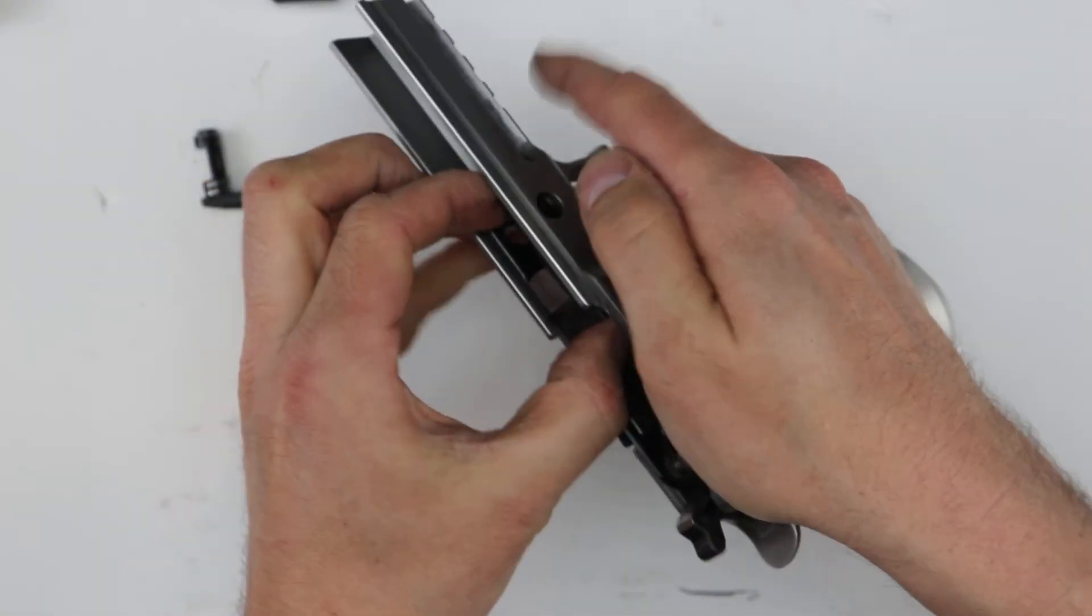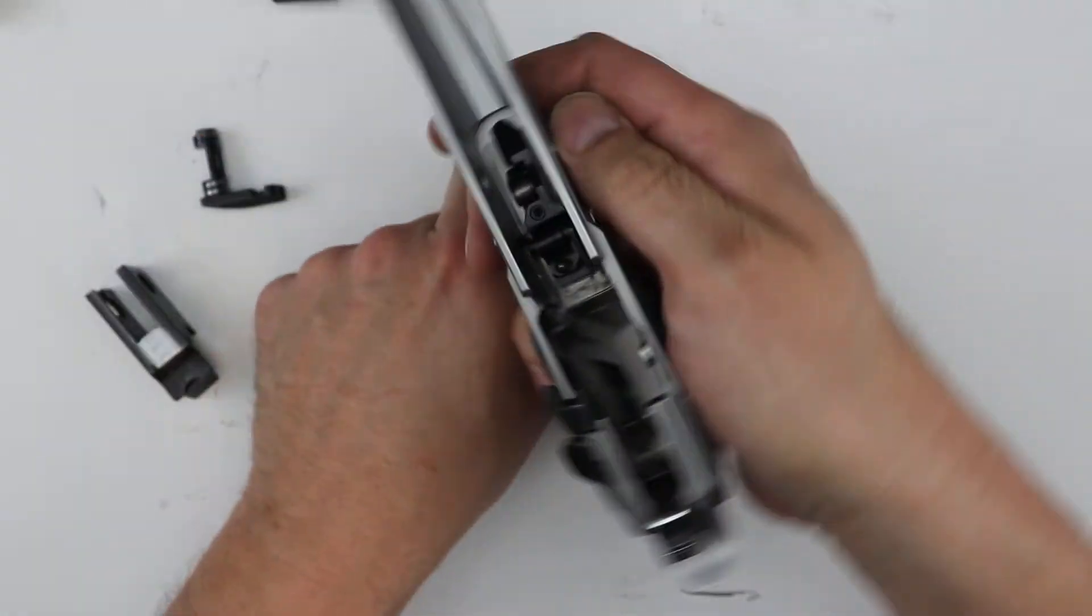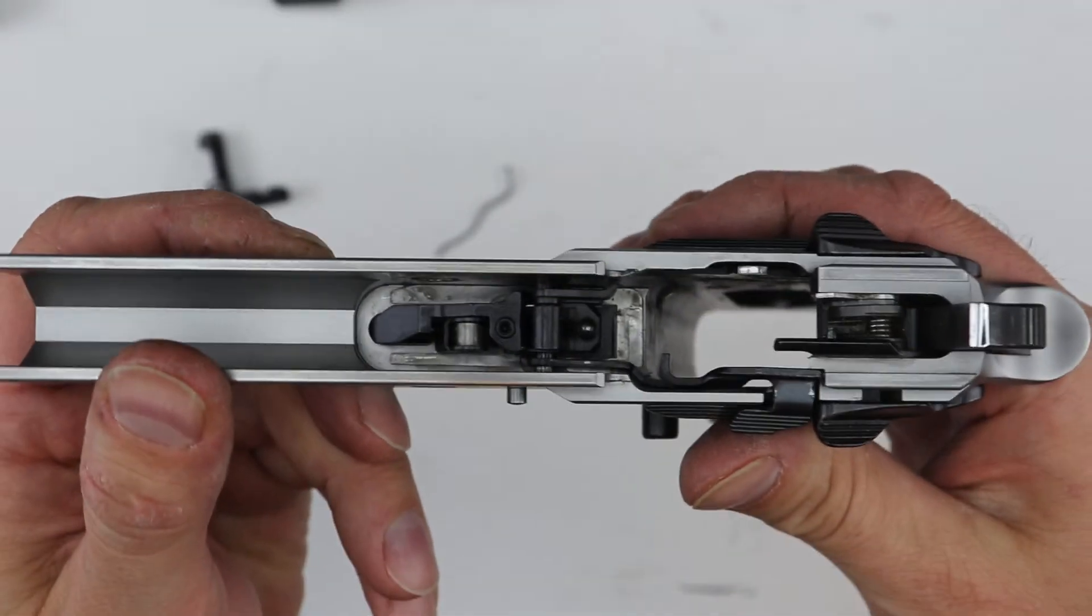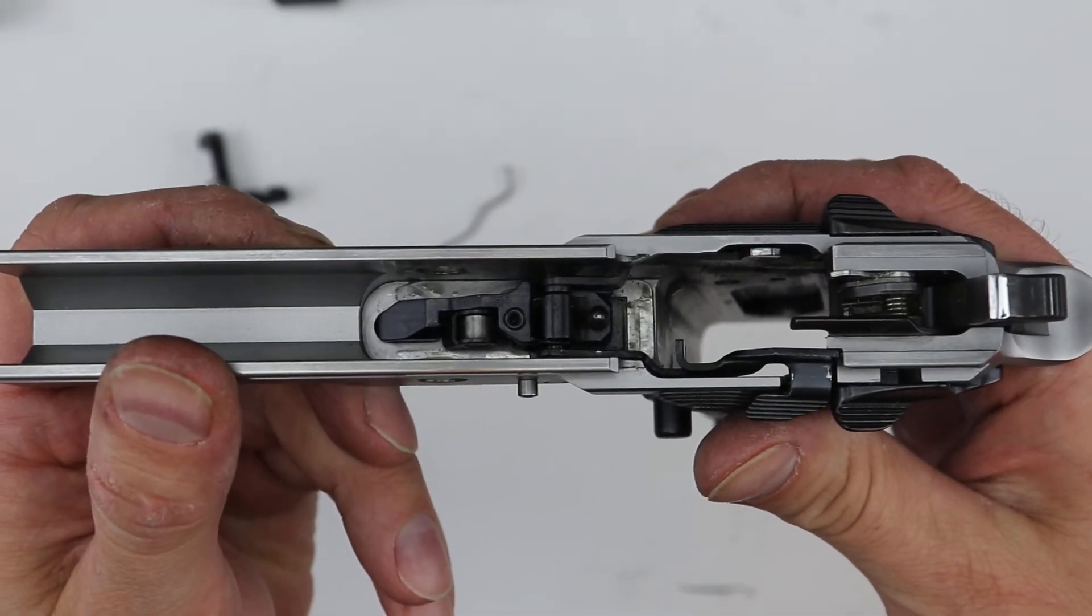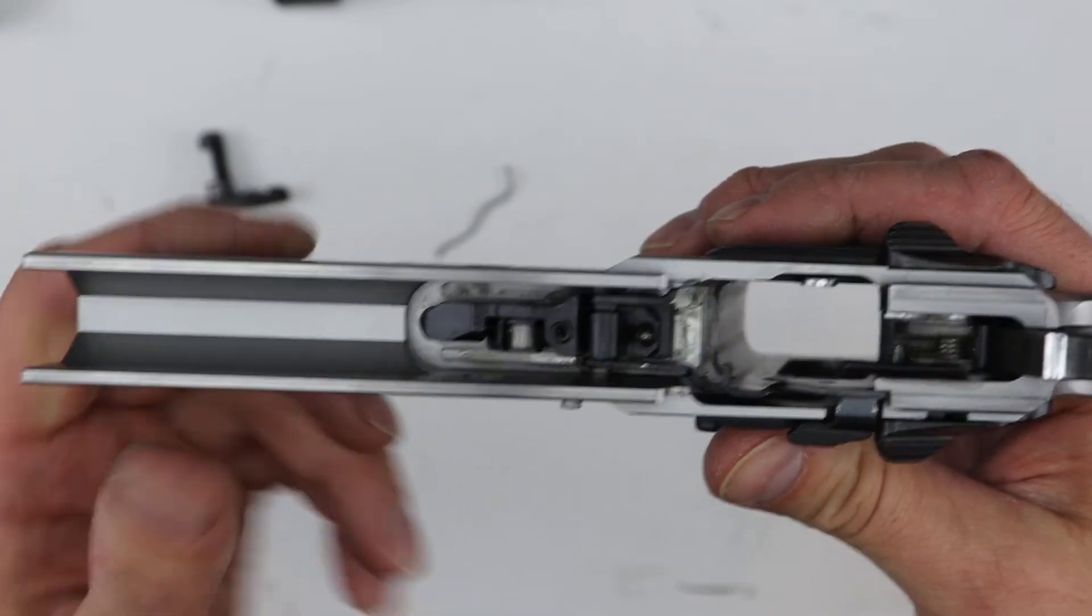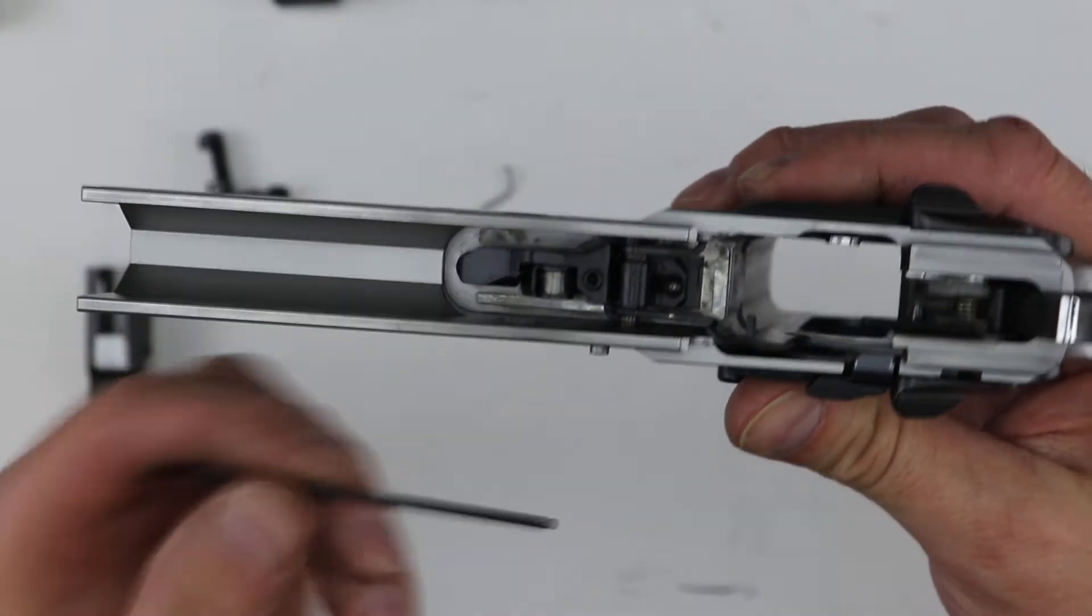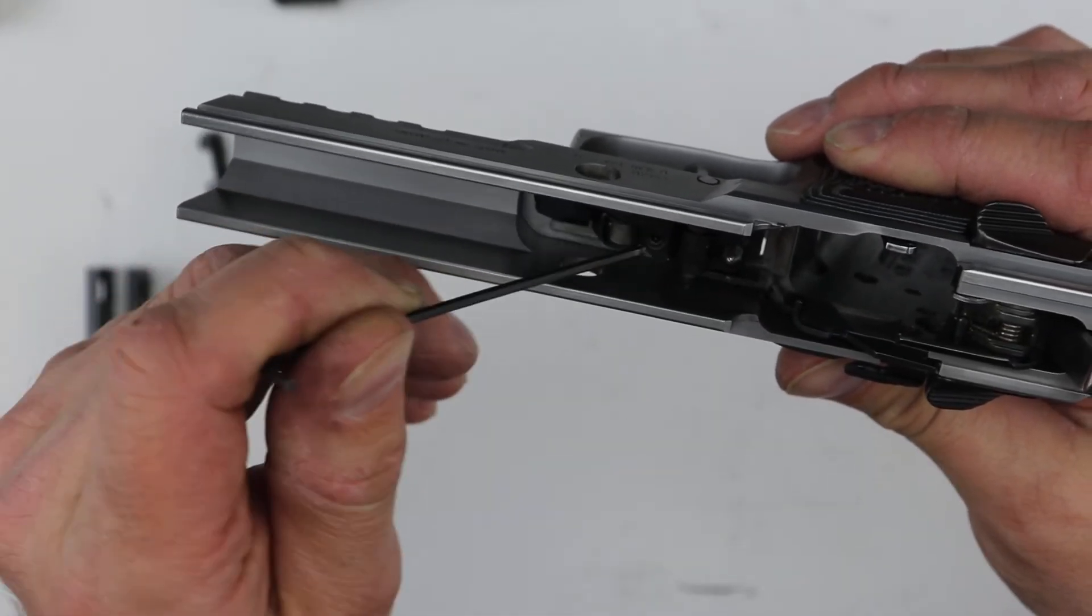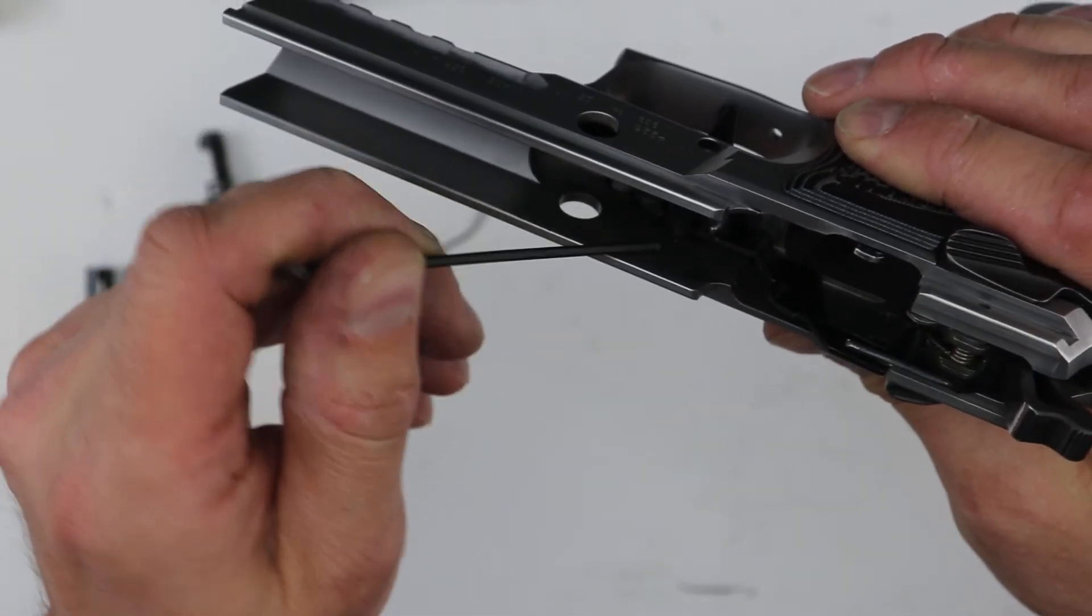Remove this here and here's the trigger system. You can see it in there. Now you can see the pre-travel screw real easily. The trigger weight screw actually goes up and presses against this piece right here, I believe. So it's far more complicated than your standard 226.